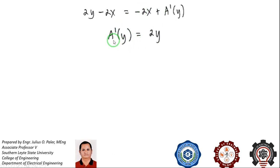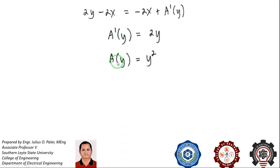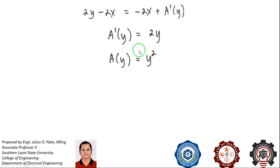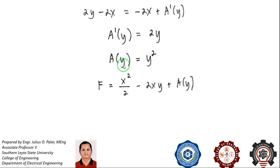To determine a of y, we integrate a prime of y with respect to y. The integral of 2y dy gives us 2y squared over 2, so a of y equals y squared, since the 2s cancel.